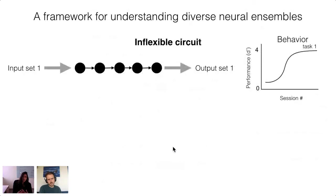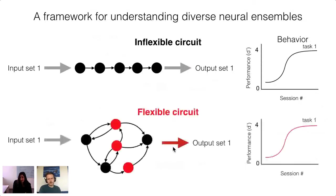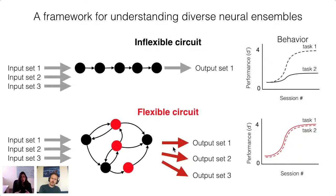An inflexible circuit would have elements with large signal-to-noise ratios tightly locked to circuit inputs and outputs — the network acts as a channel transforming inputs to behavioral outcomes. A flexible circuit would require cells more fluidly connected to the demands of any particular task. From a dynamical systems perspective, diverse neural ensembles including cells with complex response profiles — such as nominally non-responsive cells and mixed selectivity cells — may reflect that the system is in a critical state where small perturbations, such as task-relevant sensory input or internal state changes, can lead to drastically different network behavior.